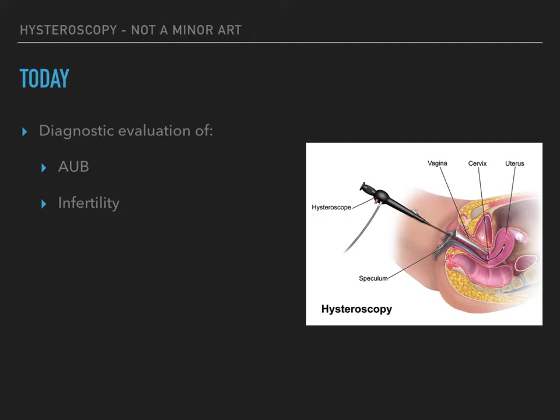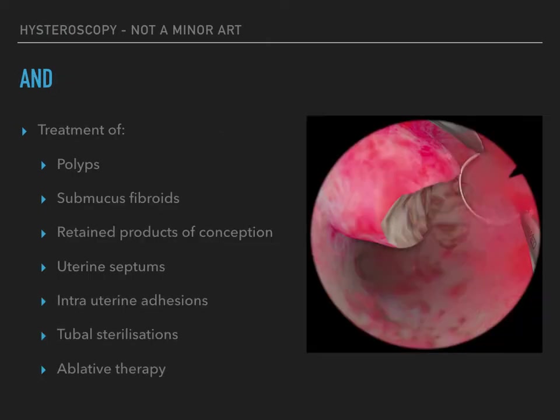Diagnostic hysteroscopy is mainly used to evaluate abnormal uterine bleeding and infertility. On the other hand, operative hysteroscopy can be utilized for the treatment of polyps, submucous fibroids, retained products of conception, uterine septums, intrauterine adhesions, tubal sterilization and ablative therapy.